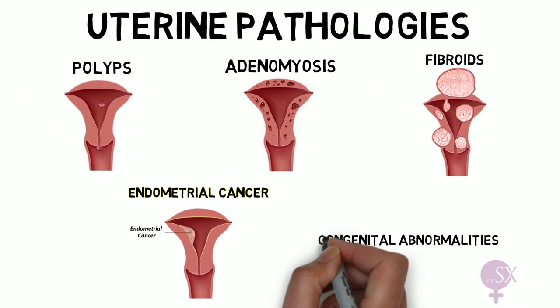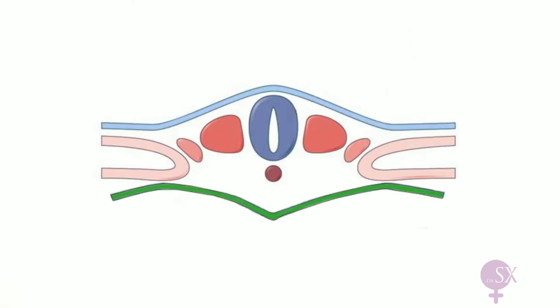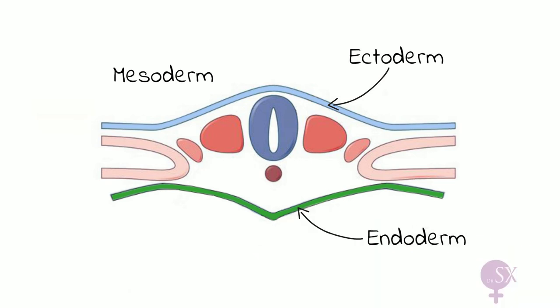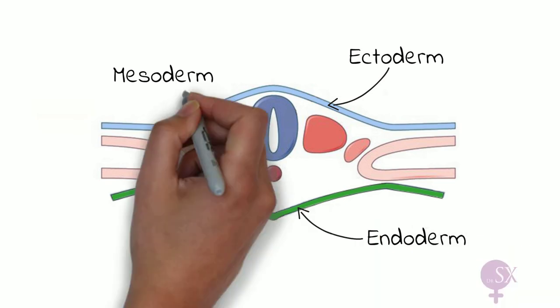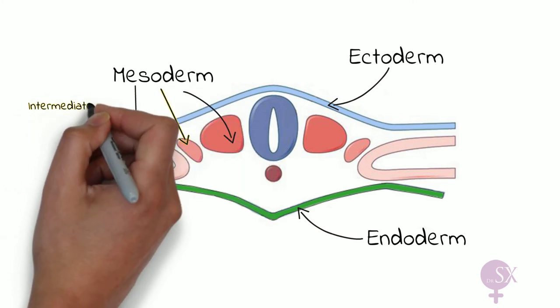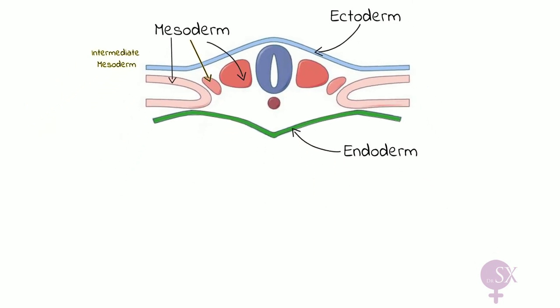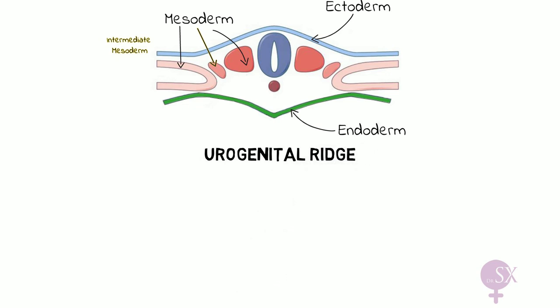Moving on to congenital uterine abnormalities. To understand these anomalies, we need to look back at embryology. During the third week, the embryo consists of three layers: ectoderm, mesoderm, and endoderm. Between the third and fifth week, the mesoderm differentiates into paraxial mesoderm, intermediate mesoderm, and lateral plate mesoderm. We are particularly interested in the intermediate mesoderm, because this is where the reproductive system arises from. The intermediate mesoderm gives rise to the urogenital ridge.